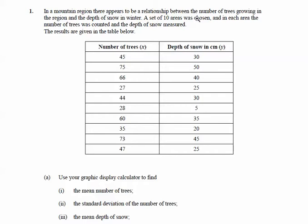A set of ten areas were chosen, so we've got ten rows here, and in each area the number of trees was counted and the depth of snow measured. So in this particular area there were 45 trees and the depth of snow was 30 centimetres, and so on. We're trying to see if there's a link between those two.